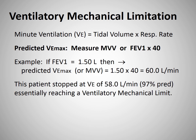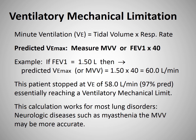This particular patient stopped exercising at a maximum minute ventilation of 58 liters, which is 97% of predicted. So we can state that this patient did essentially reach their ventilatory mechanical limits. This calculation works for most lung disorders, whether obstructed or restricted. One has to be cautious using the calculated minute ventilation because in some conditions, such as myasthenia gravis, the FEV1 times 40 may be considerably higher than if the patient was asked to perform an MVV to calculate their predicted maximum minute ventilation.